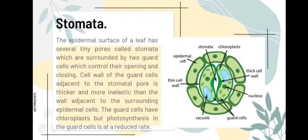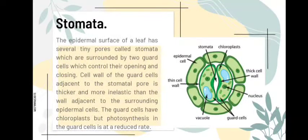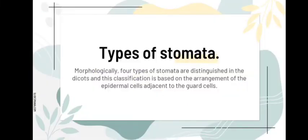Next is stomatal physiology. Stomata are pores in the leaves surrounded by two guard cells. They open and close during the process of photosynthesis. There are mainly four types of stomata, which are classified based on the arrangement of epidermal cells and adjacent guard cells.